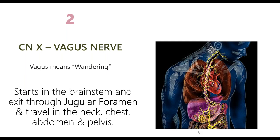The vagus nerve — vagus meaning wandering — is the longest nerve in the body, starting in the brainstem and exiting through the jugular foramen alongside cranial nerve nine (glossopharyngeal), cranial nerve ten (vagus), and cranial nerve eleven (spinal accessory), along with the jugular vein. The vagus nerve travels through the neck, chest, abdomen, and pelvis, reaching all the way down to the pelvis.